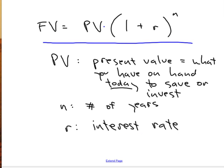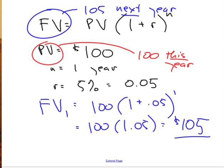The formula looks like this. Future value is equal to present value times the quantity 1 plus r to the power n, where present value is the money you have today that you're going to save or invest. n is the number of years, r is the interest rate. The future value, PV times 1 plus r to the n.